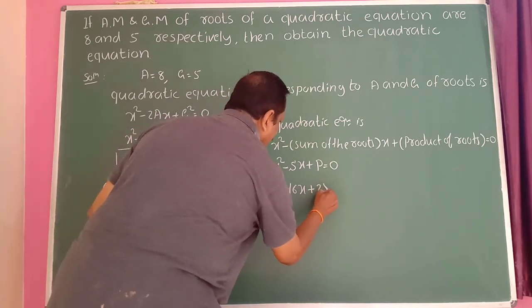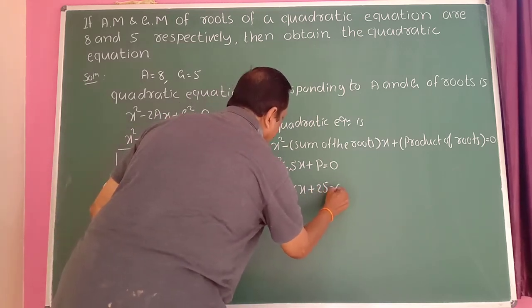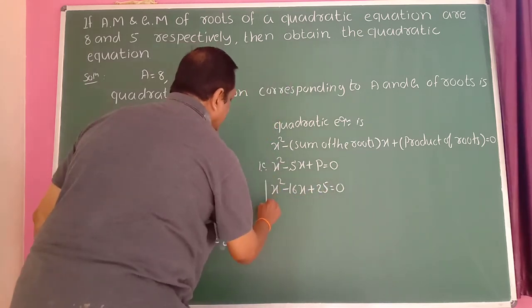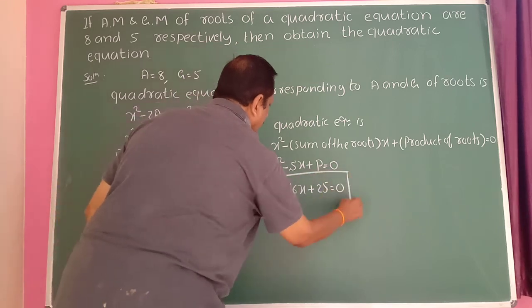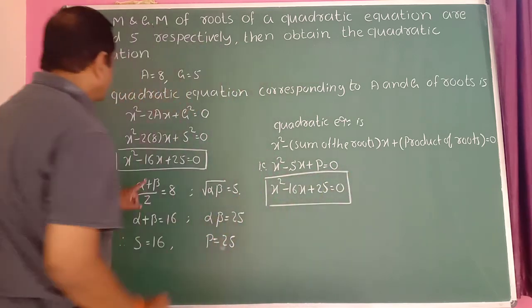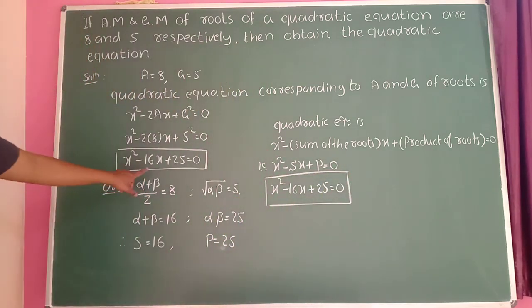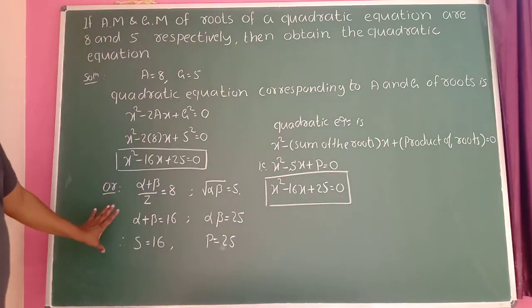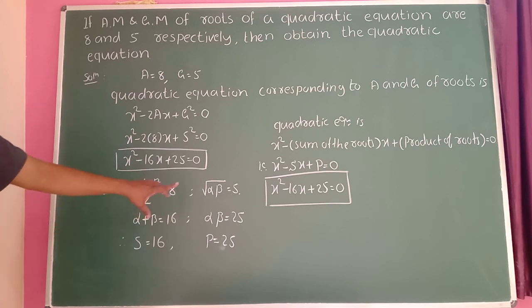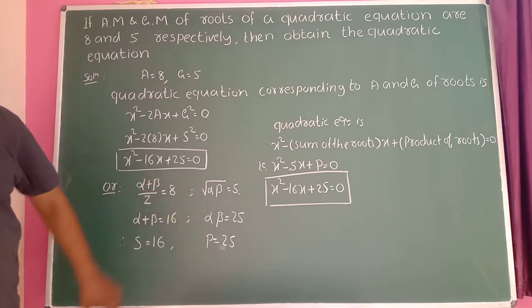So 25, that is equal to 0. Same answer — you will get the same result using either method. You can use the first method or this second method and you will get the same result.